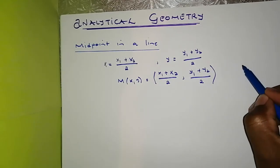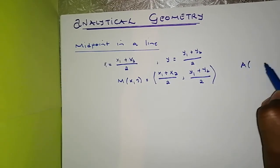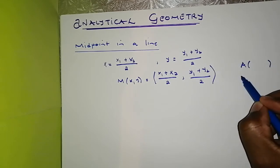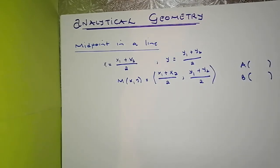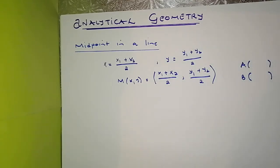If you are given two points — say point A and point B — and you are asked to find the midpoint coordinates between these two points in a particular line, this is the formula you're going to use. Let's do an example so we can appreciate this formula.